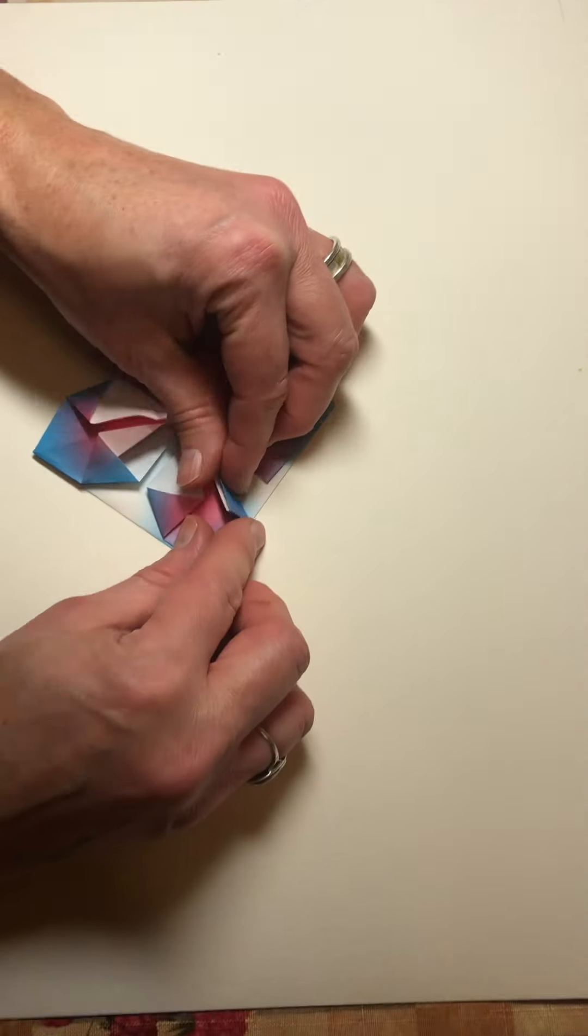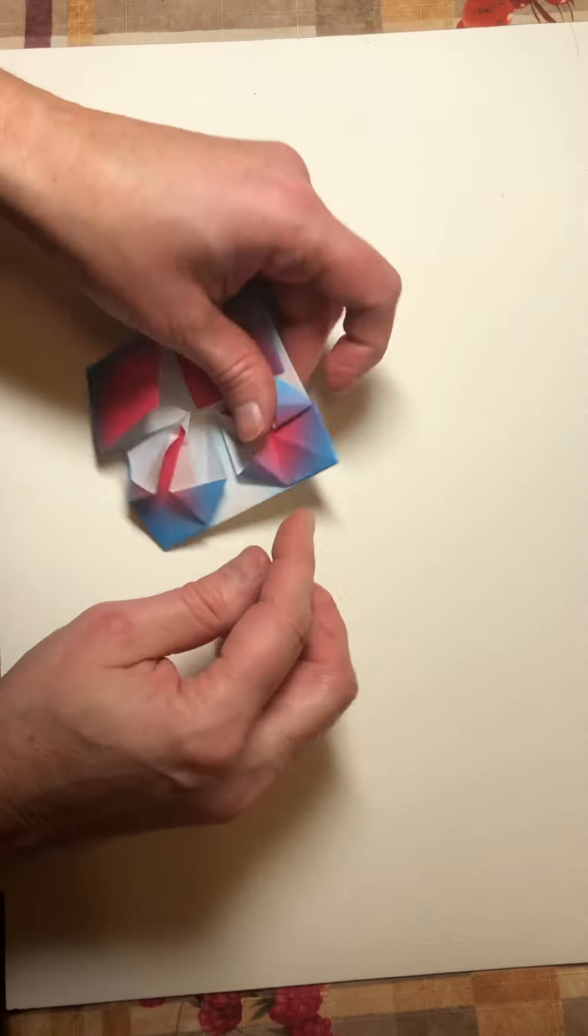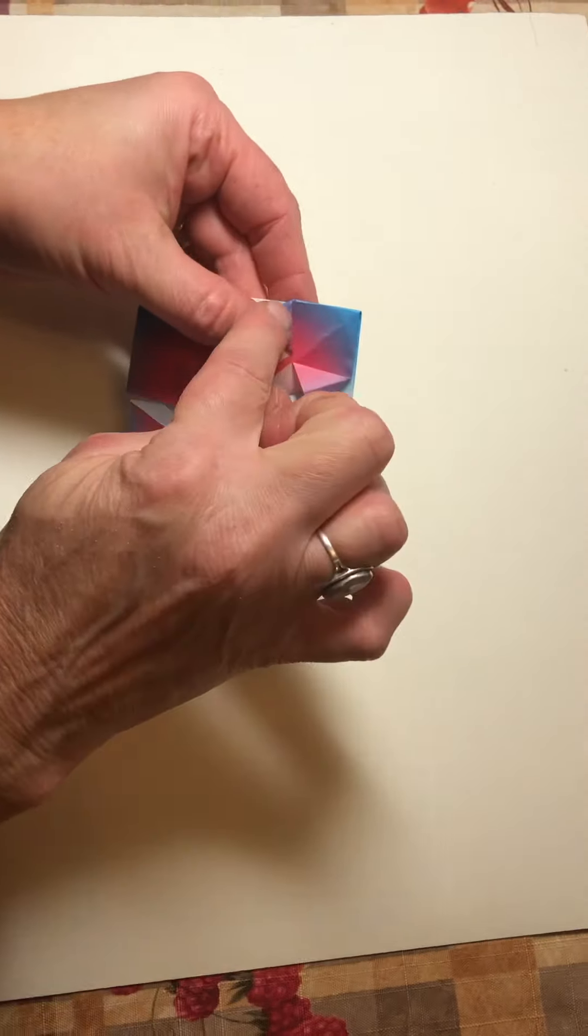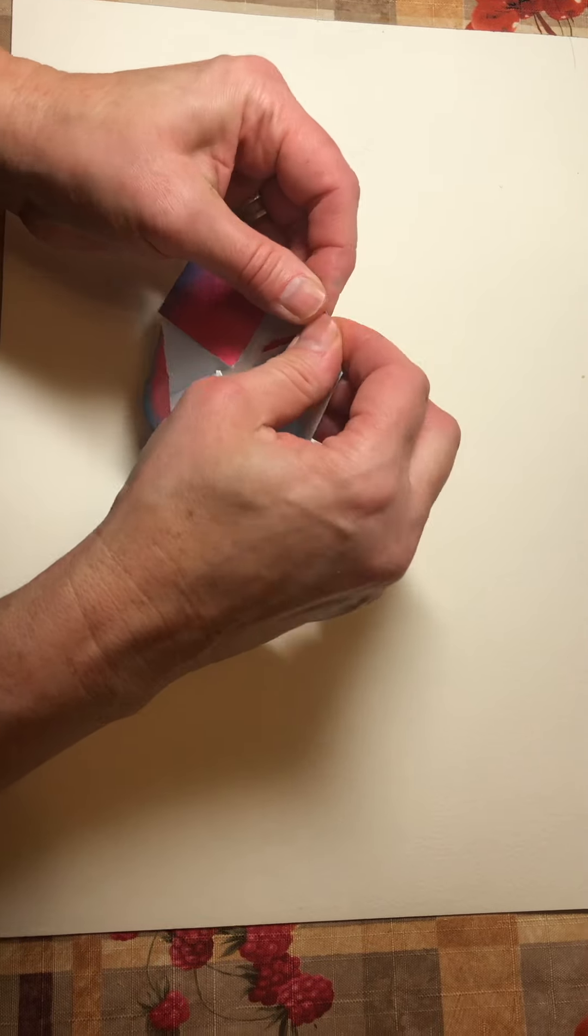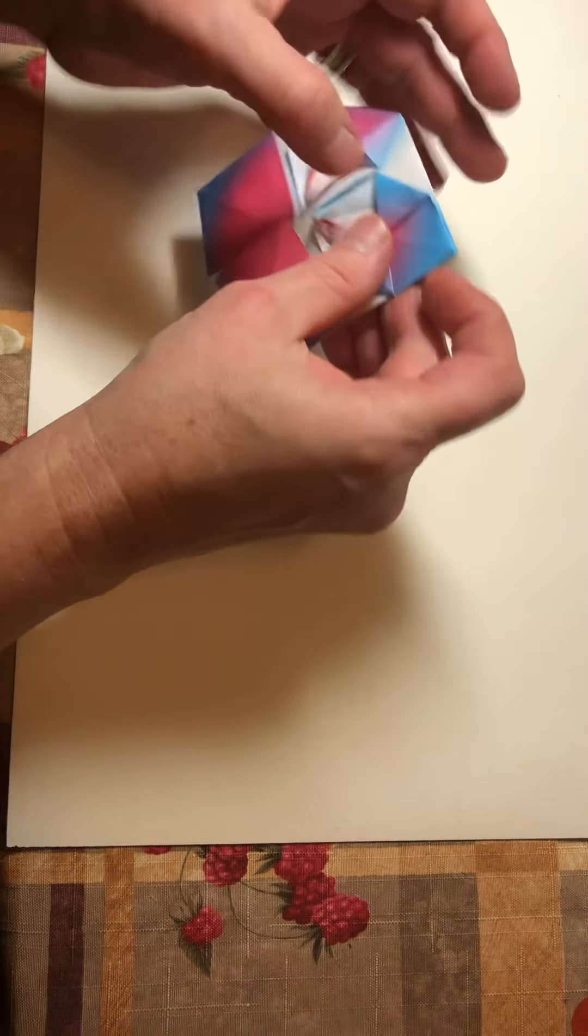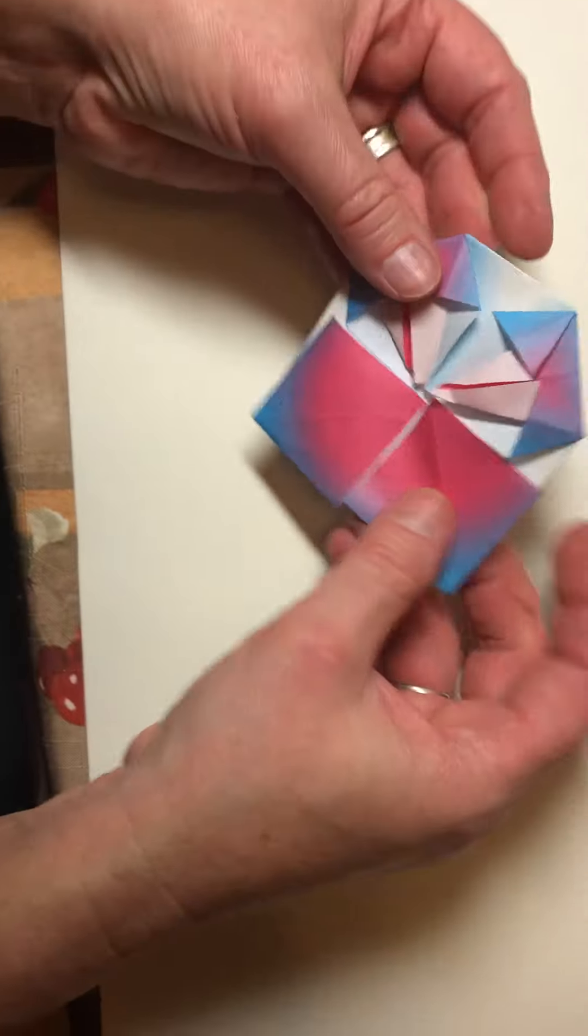So imagine I've done it all the way. And then the last step, imagine it's all the way. We take these little corners and we fold them back in between the points. And that's what is going to glue it all together to make your ornament.